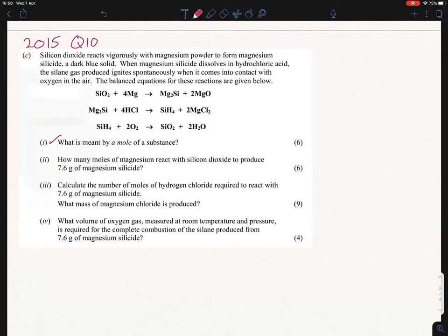Part ii: How many moles of magnesium react with silicon dioxide to produce 7.6 grams of magnesium silicide? There's a lot of information being given here, but let's just figure out what we're actually being asked. The question is asking us to figure out how many moles of magnesium react to produce 7.6 grams of this guy over here. We're going to be using our formula, number of moles equals mass over MR. If we plug magnesium into that, we'll quickly find out that we don't have the mass of magnesium anywhere. So we actually can't use that formula for magnesium, but we can use this for a workaround.